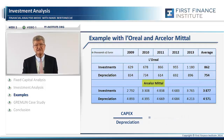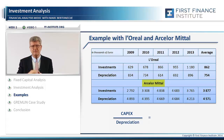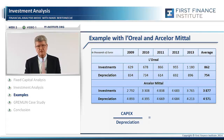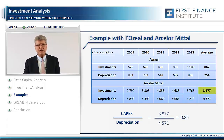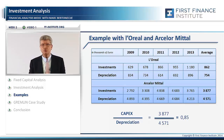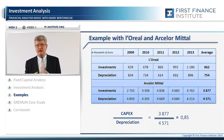ArcelorMittal, the steel industry company, is in a very cyclical business with sales declining by 10% and obviously some overcapacity, with absolutely no need to undertake new investment. With an average level of capital expenditure of 3,877,000,000 and an average yearly depreciation of 4,571,000,000, the ratio is equal to 0.85, well below one.